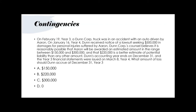Let's try another example. On February 19, Year 3, a Duncorp truck was in an accident with a car driven by Aaron. On January 16, Year 4, Dunn received notice of a lawsuit seeking $500,000 in damages. Duncorp's counsel believes it's reasonably possible that Aaron will be awarded between $150,000 and $300,000, with $220,000 being a better estimate. Dunn's fiscal year ends December 31, Year 3, and financial statements were issued March 8, Year 4.